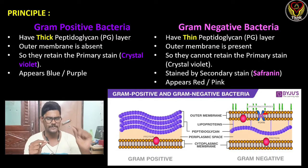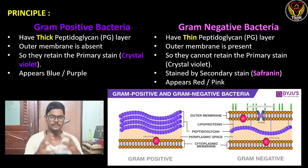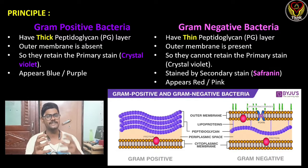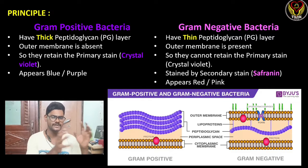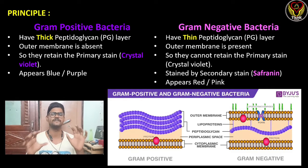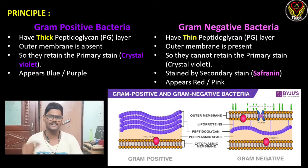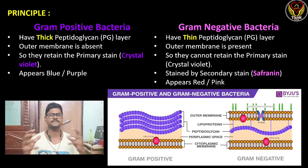Gram negative bacteria have a very thin peptidoglycan layer and there is an outer membrane called the LPS (lipopolysaccharide) membrane. So they cannot retain the primary stain crystal violet and are stained by the counter stain safranin, appearing red or pink in color. So gram positive bacteria have a thick peptidoglycan layer, and gram negative bacteria have a thin peptidoglycan layer plus an outer membrane — these are the differentiating factors.